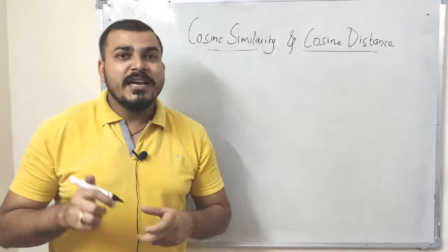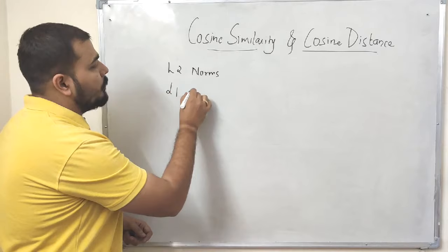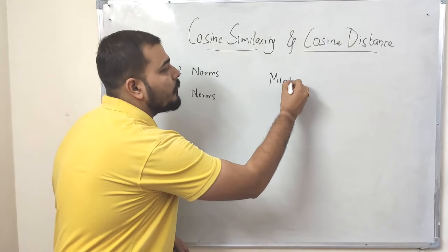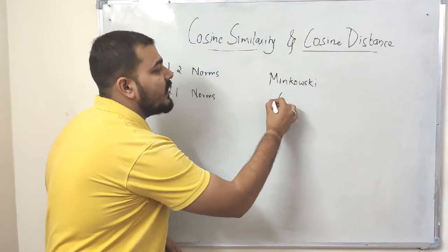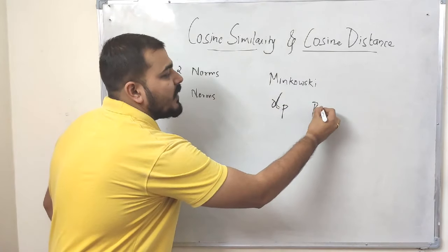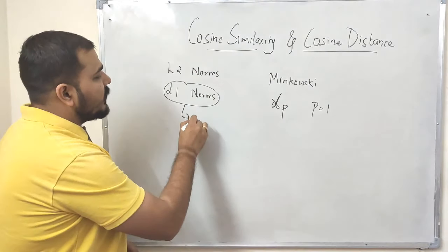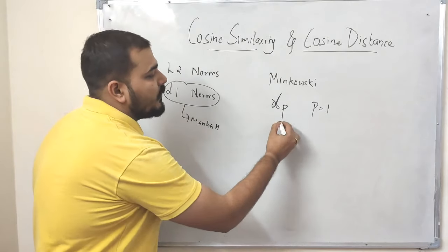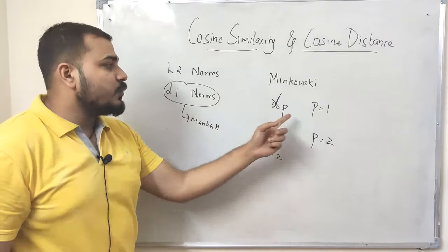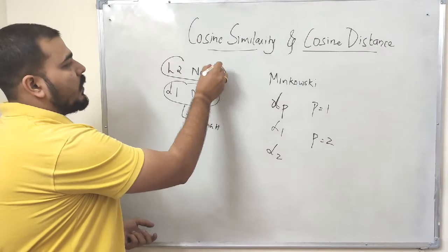I just forgot to mention one point: Euclidean distance is basically called L2 norm, and Manhattan distance is basically called L1 norm. The reason for this comes from a terminology called Minkowski distance, which is represented as L of P norm. When P equals 1, it becomes Manhattan distance (L1), and when P equals 2, it becomes Euclidean distance (L2).